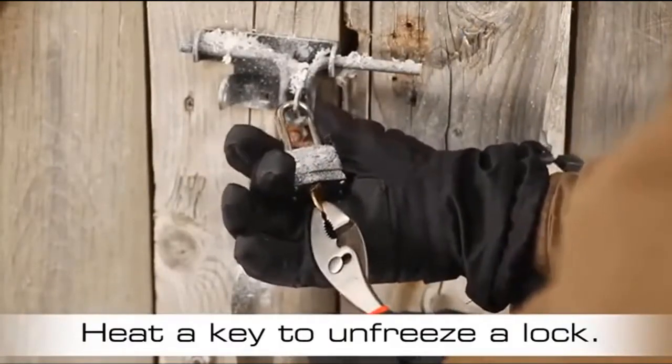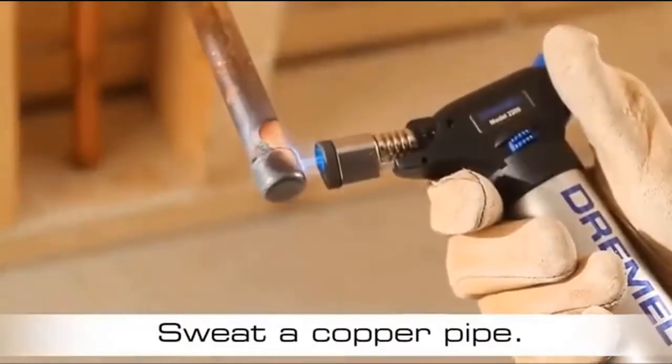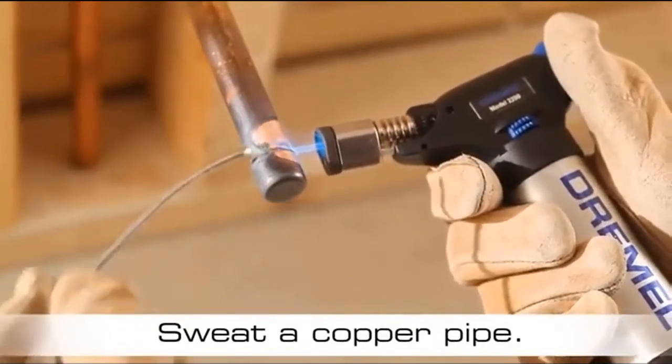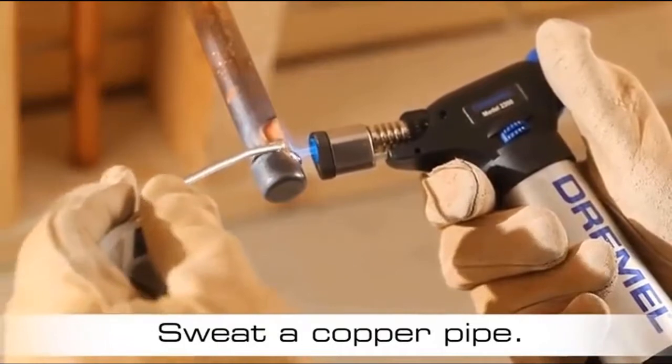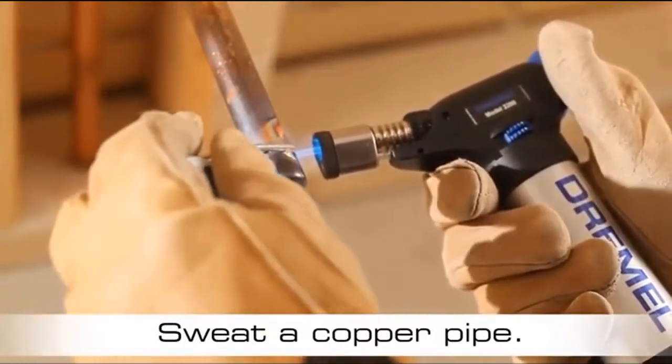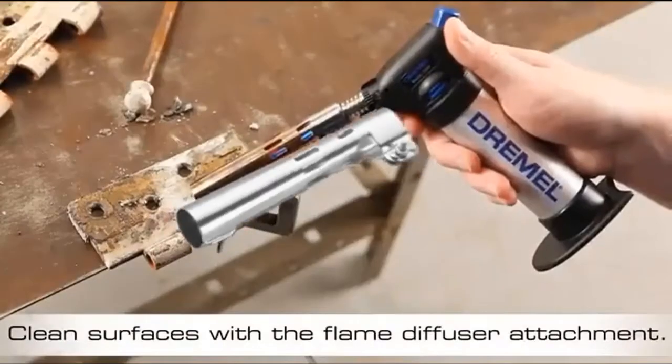A self-ignition button eliminates the need for an external igniter and the tank holds enough butane for 75 minutes of continual use. The kit includes a deflector case, cutting knife, hot air tip, protective cap, shaping knife, solder, soldering tip, sponge, tins, wide blower tip, wrenches and Versa tip tool.